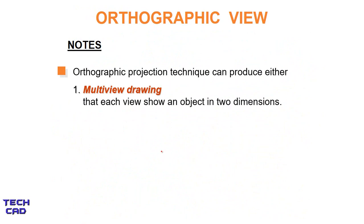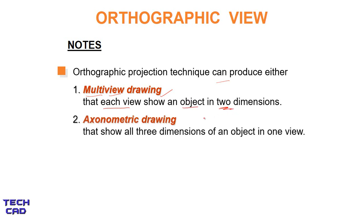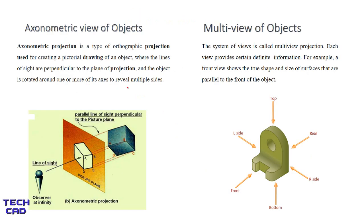Now what is an orthographic view? There are two types of orthographic views. Orthographic projection techniques can produce either multi-view — as the name suggests, we have a lot of views to show a particular 3D object, where each view shows the object in two dimensions — or axonometric drawing, which shows all three dimensions of an object in one view. This is the difference between axonometric view and multi-view.